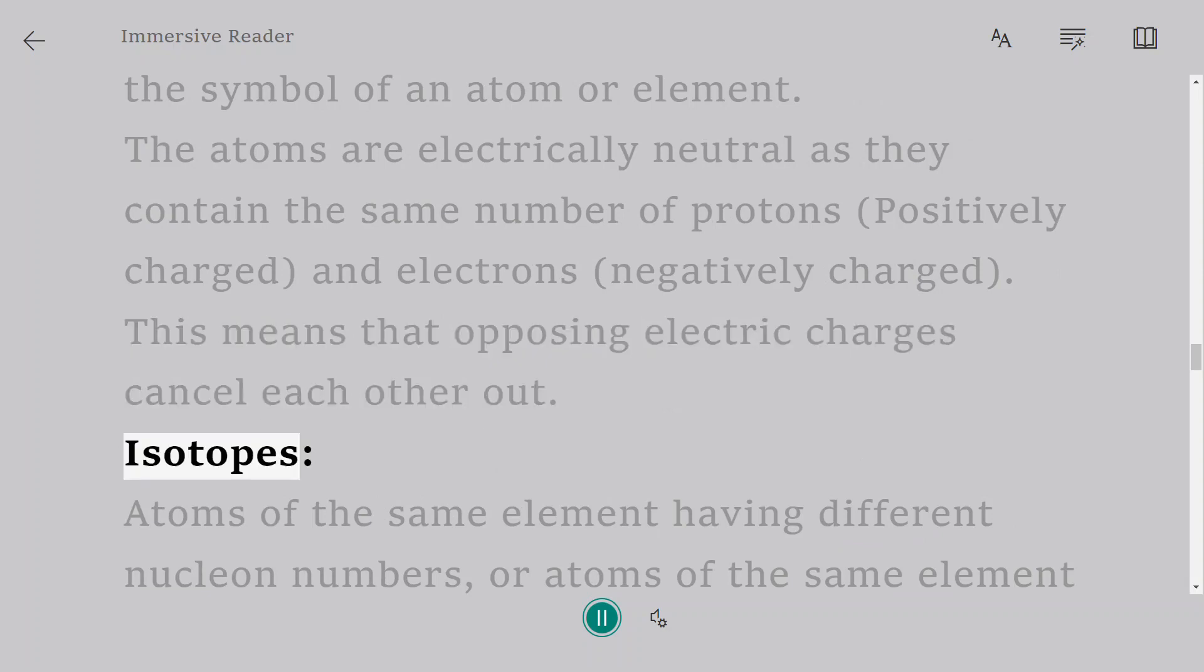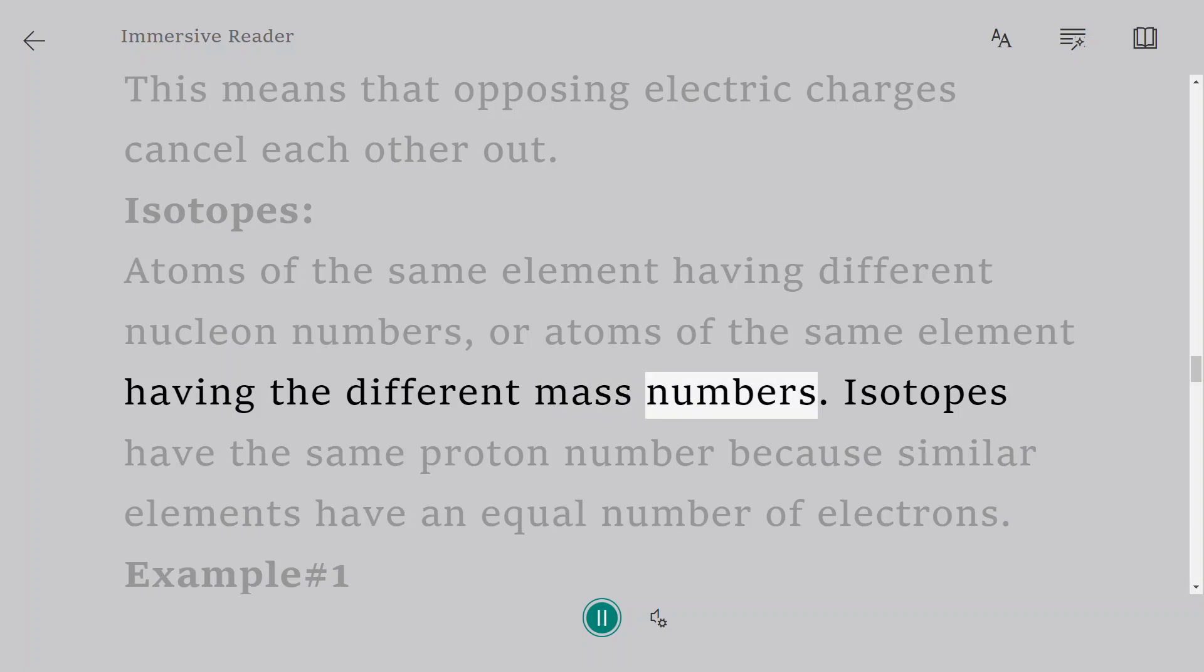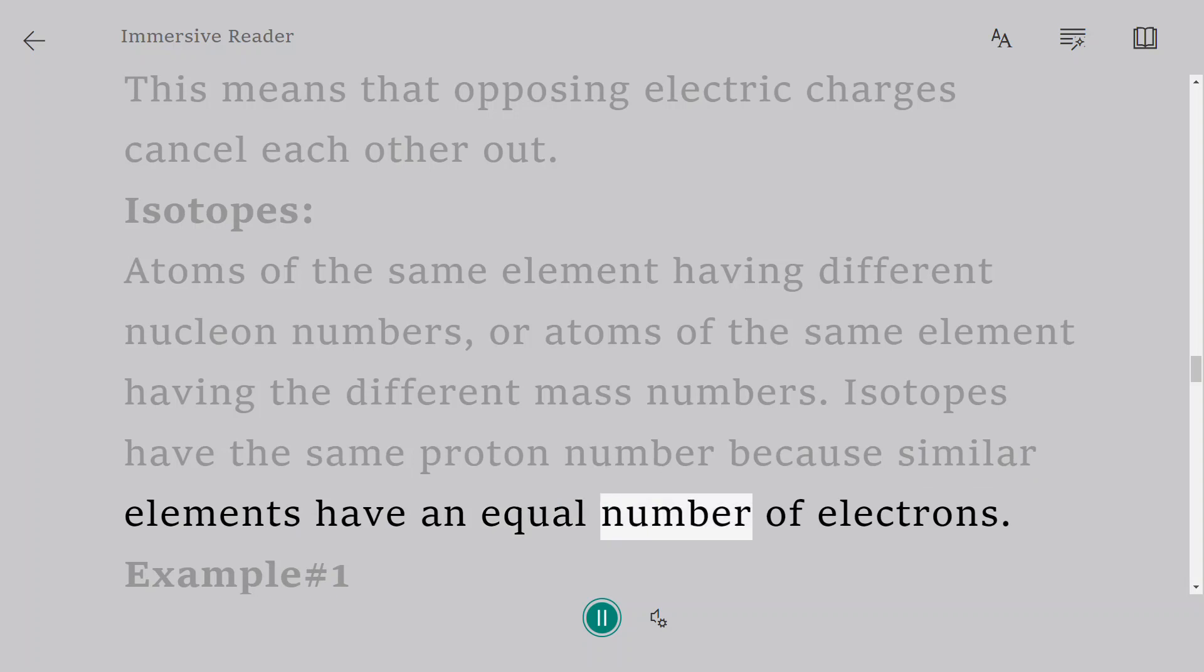Isotopes: Atoms of the same element having different nucleon numbers, or atoms of the same element having different mass numbers. Isotopes have the same proton number because similar elements have an equal number of electrons.